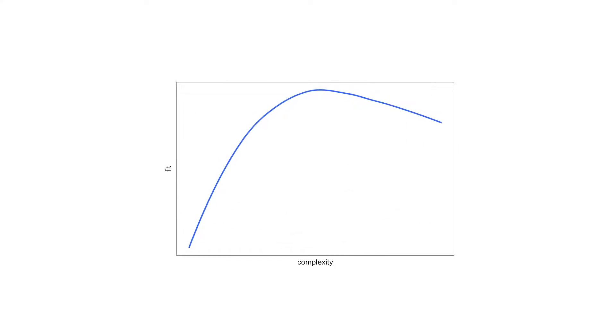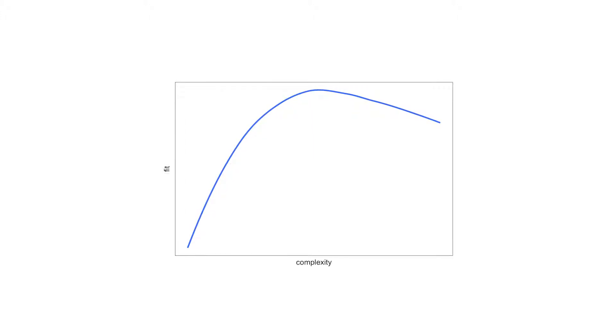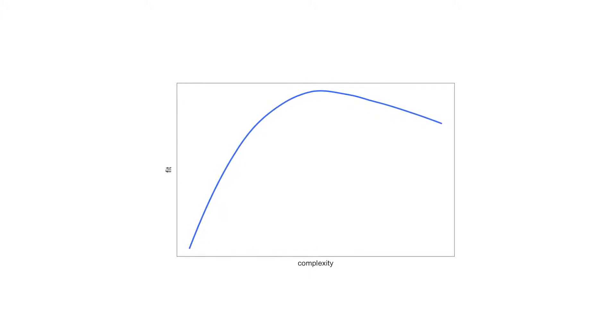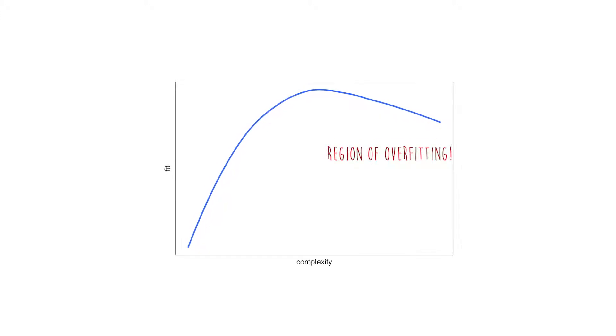Here's a graphic to illustrate that. On the x-axis is model complexity — the number of variables in the model. The fit, on the y-axis, improves as you add more variables up to a point, and then it starts going downhill, indicating you've overfit the data. You will poorly generalize your model across different situations. So the more variables we add, the more likely we are to overfit and the more likely we are to have a model that doesn't replicate on an independent sample. That right there is the trade-off.